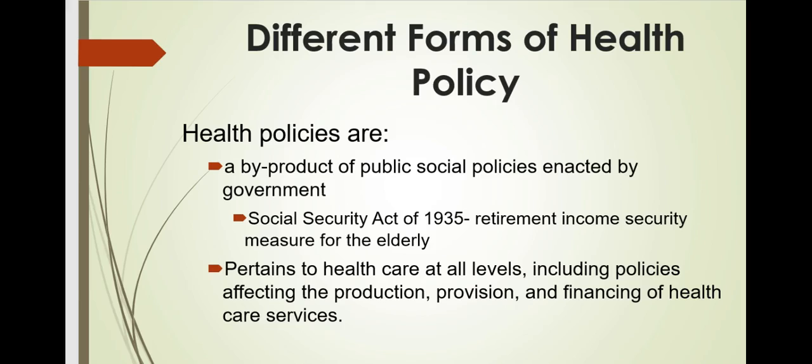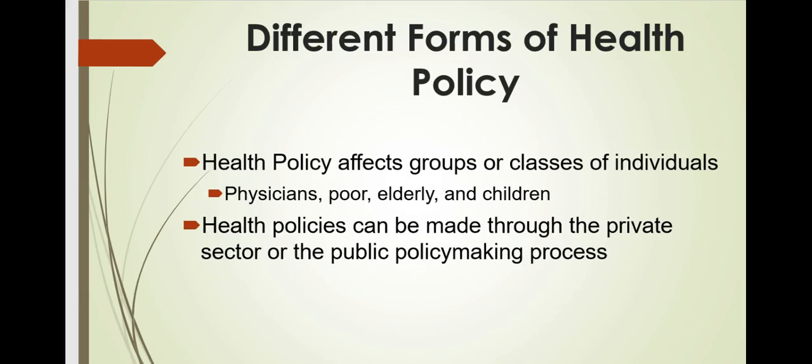Health policies are first a byproduct of social policy — for example, the Family Independence Act extends health benefits to welfare recipients once they obtain employment. They're also a byproduct of other public policies, such as policy supporting biomedical research. Health policies affect specific categories of individuals such as physicians, the elderly, or children, as well as certain types of organizations such as hospitals, nursing homes, or employers. Health policies are sometimes created to preempt public policies — for example, the pharmaceutical industry may voluntarily restrict price increases to avoid price control legislation.